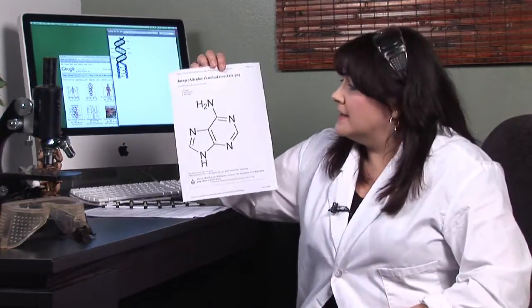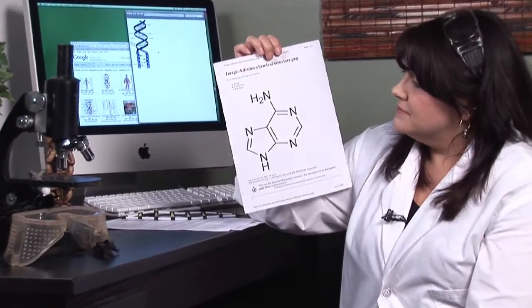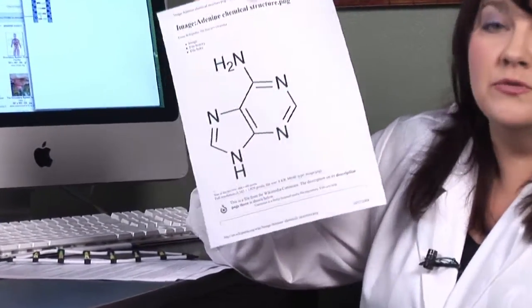This is the molecular structure of adenine. You'll see there's nitrogen, hydrogen, and these rings where there isn't a letter—they're made mostly of carbon.